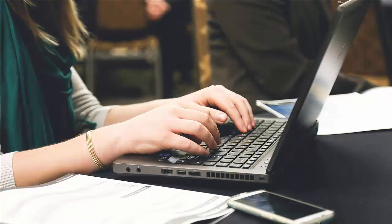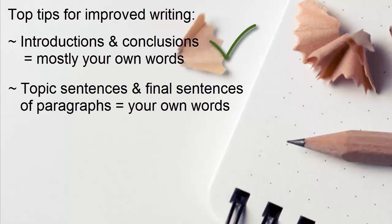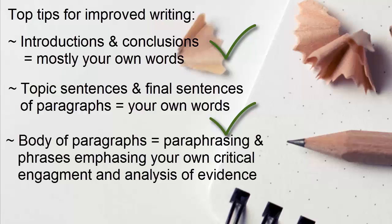So using these techniques, Turnitin may be able to help you identify where you can improve your writing. The introductions and conclusions to your assignment should usually contain mostly your own words. Topic sentences and the final sentences of paragraphs should also use your own words, not someone else's. And in the body of your paragraphs, you can use paraphrasing and phrases that emphasize your own evaluation of the sources to show your critical engagement with the evidence.